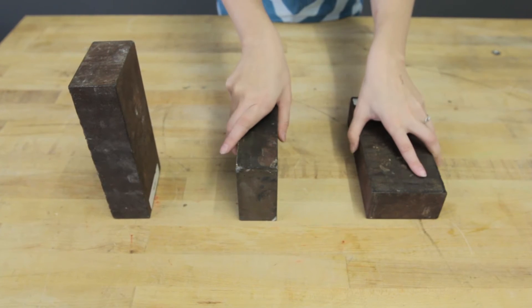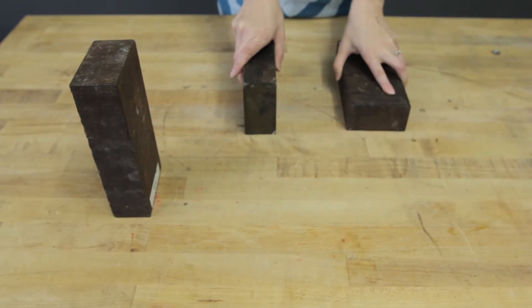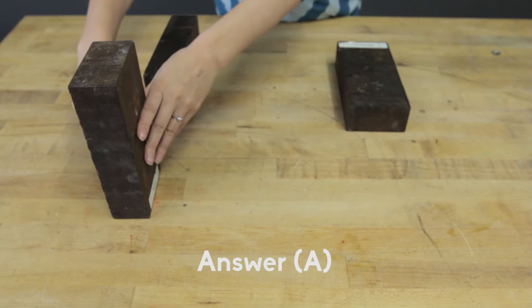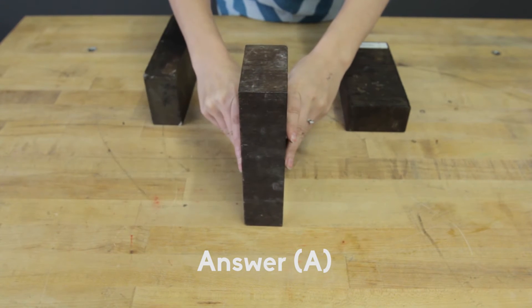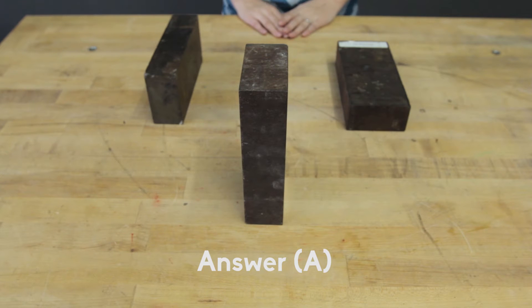Note that the weight of the block, the acting force, is the same regardless of orientation. So to create the maximum pressure on the tabletop, we want to put the smallest area of the block in contact with the table.